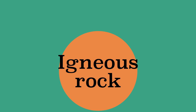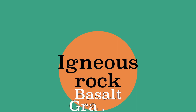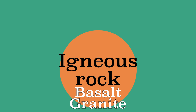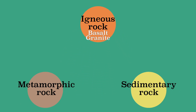Two examples of igneous rock are basalt and granite. The oceanic crust consists mainly of basalt, while the continental crust consists mainly of granite. Igneous rock first arises as a result of endogenous processes — processes that take place as a result of the heat from the interior of the earth.